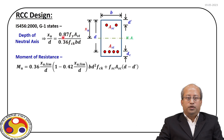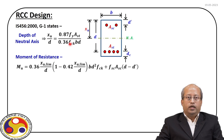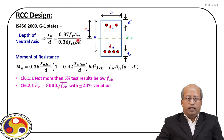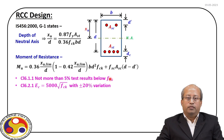Then using this information, we find out the ultimate moment of resistance for this section. However, from our experience, we know that these variables, although we consider them deterministic in our design process, in reality they deviate from the value that we consider within this design framework. In fact, our codal provision says that we should accept FCK values when not more than 5 percent of the test results fall below this specified limit.